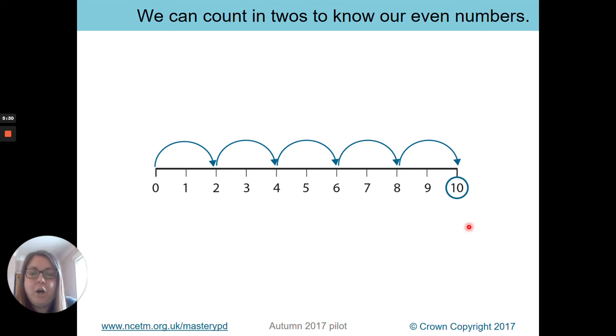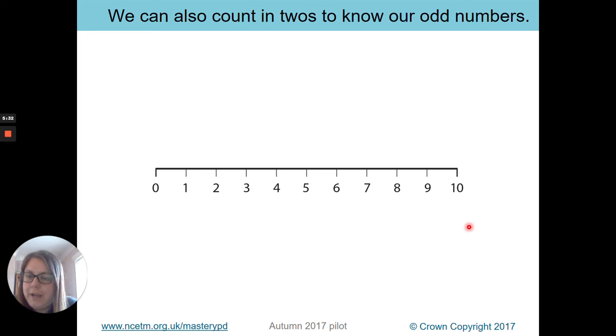But we can also count in twos using our odd numbers. What number am I going to start with then? If I'm going to count in twos starting from our odd numbers, I'm going to start at what number and jump to what number? Have a little think. Maybe it's a bit tricky. So we know our odd numbers are one, three, five, seven and nine. So I'd start at one and then jump to three, jump to five, seven and then nine. And you can see it's going in jumps of two. Well done if you spotted that.